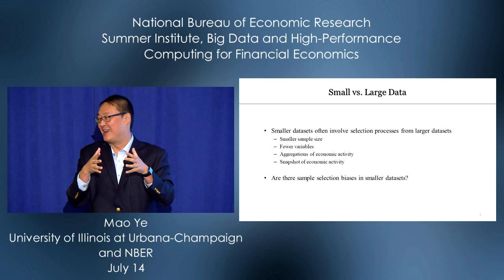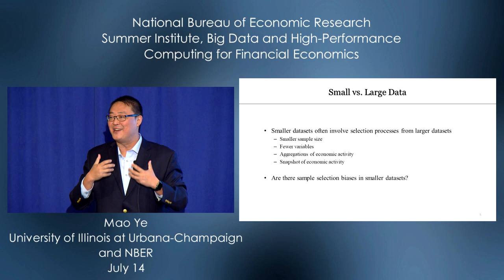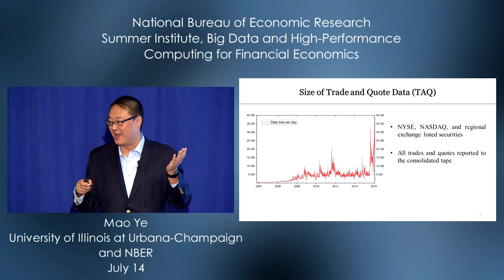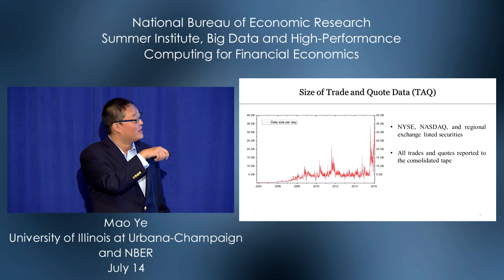It creates data we can manage. But there's a natural question: are there any selection biases when we create smaller data? I want to show you one example — the New York Stock Exchange Trade and Quote (TAQ) data. It's a small dataset, and I want to use it as an example.